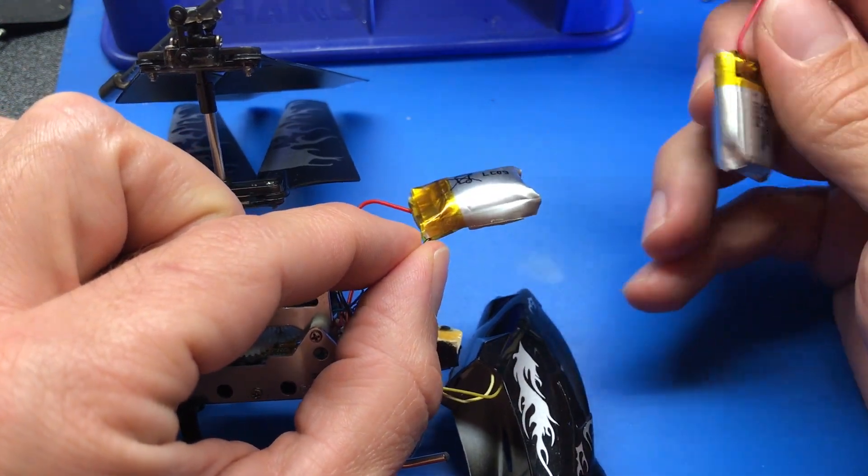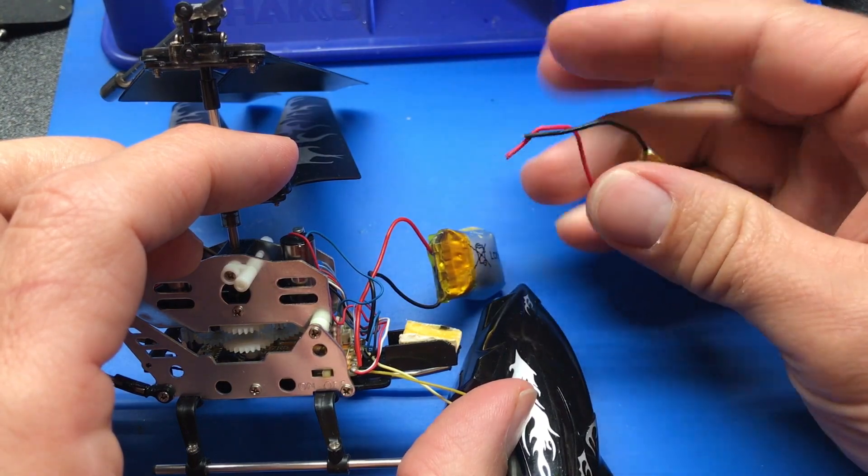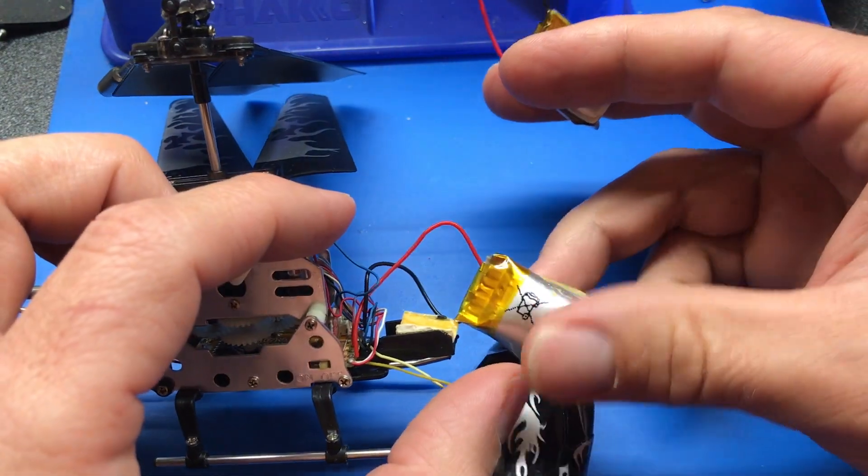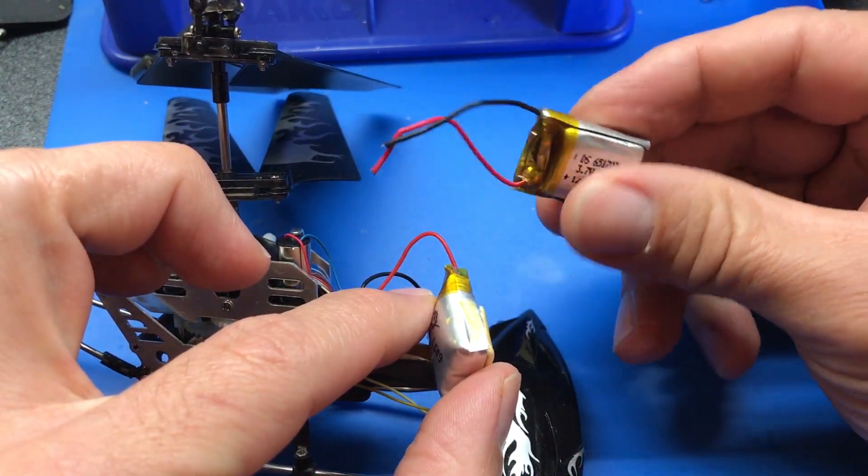So what I'm going to do is I'm going to solder in a new battery. These don't have quick connections or anything. There are different ways that you can solder in a battery. And by the way, if you want to go buy one of these, it's just a few bucks I think online.